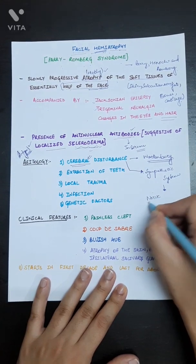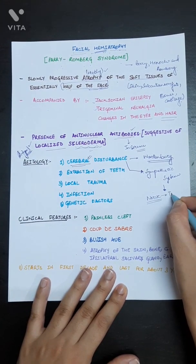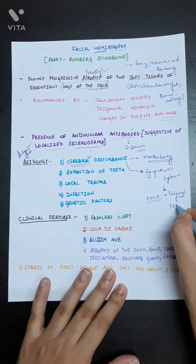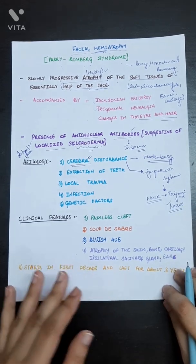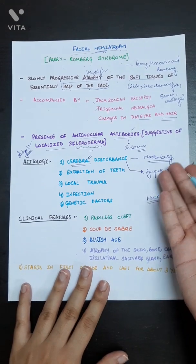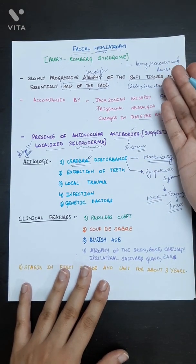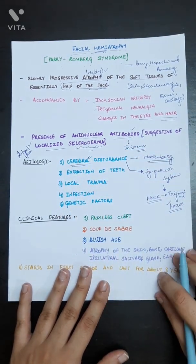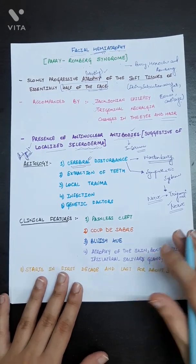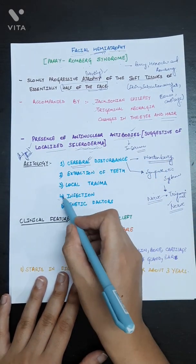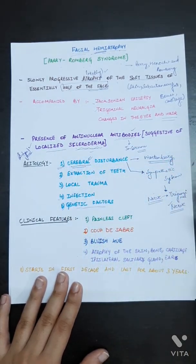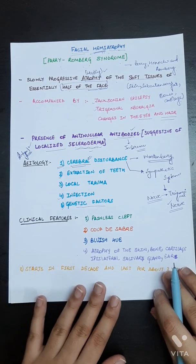And the nerve that was involved was trigeminal nerve according to his studies. Wartenberg suggests that due to cerebral disturbances, facial hemiatrophy occurred. But there are also few reasons such as extraction of teeth, local trauma, infection, and genetic factors. But the main reason was considered cerebral disturbances which was given by Wartenberg.